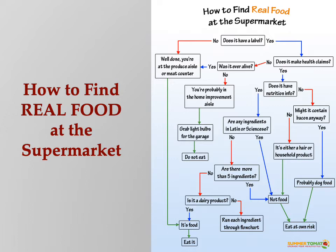Was it ever alive? No — you're probably in the home improvement aisle. In terms of healthy eating: vegetables, plants, fruits, and nuts — good stuff. Once you go down the aisles, you're into processed foods that likely have a lot of sugar, a lot of fat, and a lot of salt — three things you're probably already getting enough of.